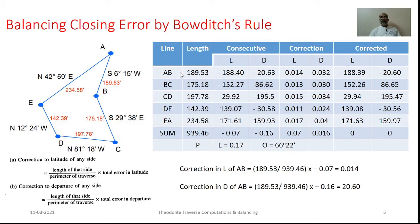Similarly, for line AB, the correction for departure can be worked out as 189.53 divided by 939.46 into minus 0.60. With opposite sign, that comes to be 0.032. Hence, minus 20.63 plus 0.032 comes to be minus 20.6. In the same manner, we can work out all the corrected consecutive coordinates. As we have their algebraic sum, it has to be 0.